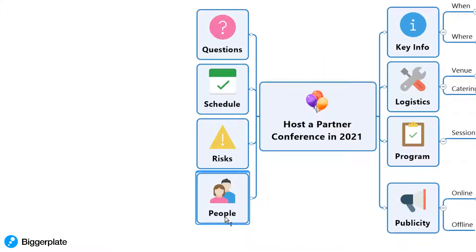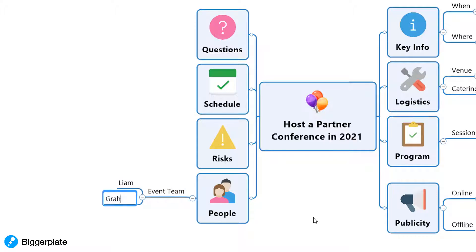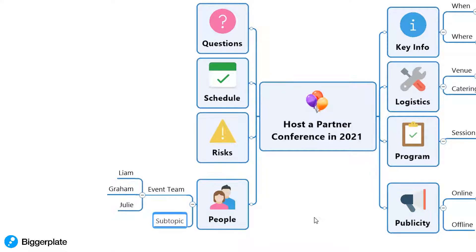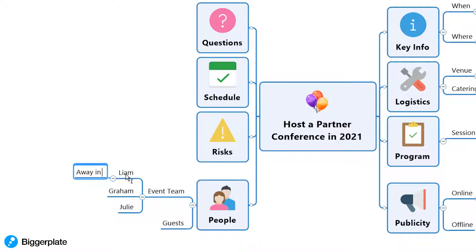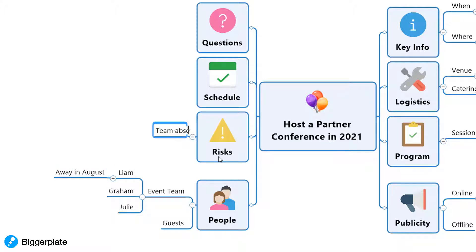The mind map also makes it easy for us to move seamlessly between different areas of focus as our thinking and discussions develop. For example, as we start to think about the people part of our project and perhaps our event team, we may be prompted to think about how there might be a risk of key people being out of the business at key periods in the project and how this might impact our delivery. The map software makes it easy to move back and forward between these different areas, and we can even use visual cues in the software to make certain informational connections stand out even further.